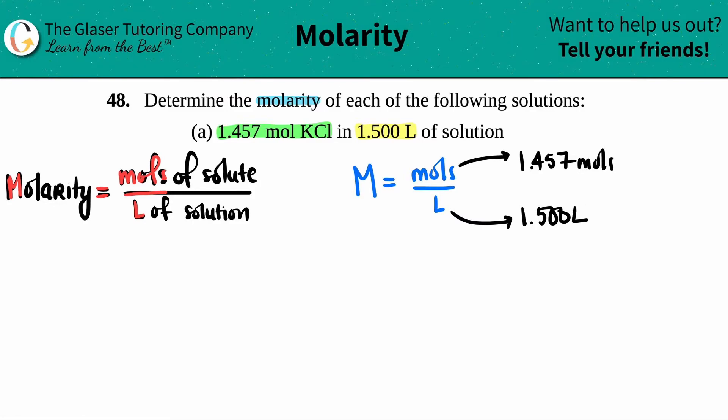And then the liters—oh, they told us that too. This would be 1.500 liters. So if I just plugged in and did the math, capital M molarity equals 1.457, and I'll just put the units here for good practice, divided by 1.500, and that's liters.